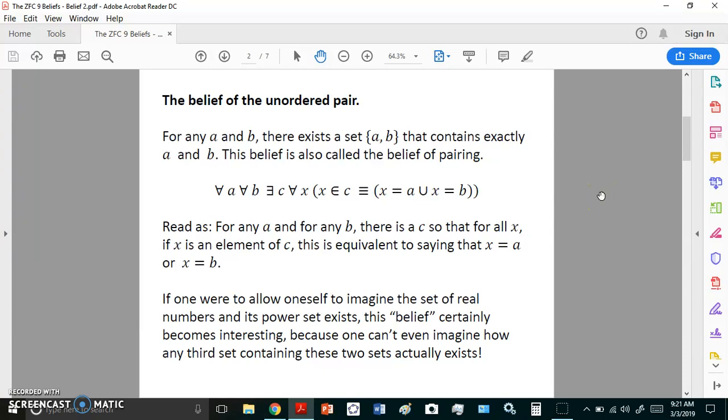It says that for any A and B, it doesn't even state what A and B are because there is no formal definition of set. It says there exists a set A and B that contains exactly A and B. This is the way it's written in first-order logic, and it's read as: for any A and for any B, there is a C, so that for all X, if X is an element of C, this is equivalent to saying that X is either equal to A or it's equal to B.